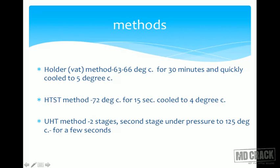The Holder method, also called the Vat method, heats milk to 63–66°C for 30 minutes and then quickly cools it. This method is not frequently used. HTST — High Temperature Short Time — rapidly heats milk to 72°C for 15 seconds and then cools it rapidly to 4°C. The UHT — Ultra High Temperature — method boils milk in two stages; the second stage is done under pressure, which allows the temperature to exceed 100°C. In the UHT second step, milk is heated to 125°C for a few seconds and then cooled.